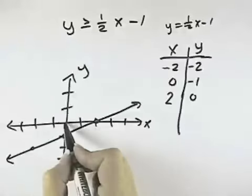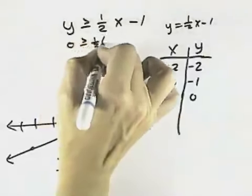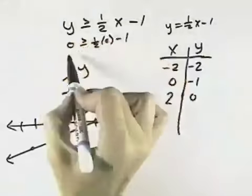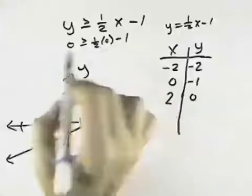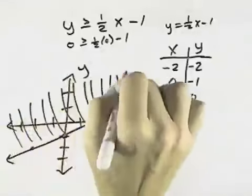And then we need a test point to see which side to shade. I'm going to try the origin and see: is 0 greater than or equal to 1/2 times 0 minus 1? Yes, 0 is greater than or equal to -1, so that says on this inequality we shade the upper left-hand region.